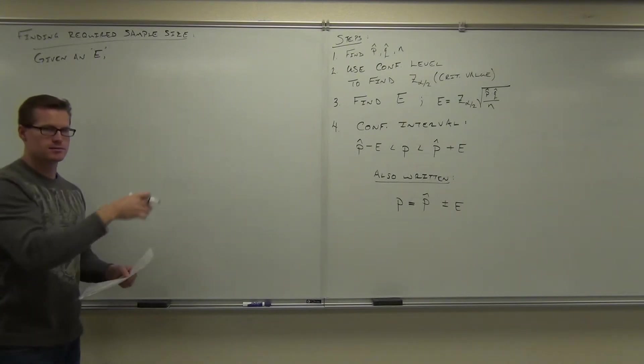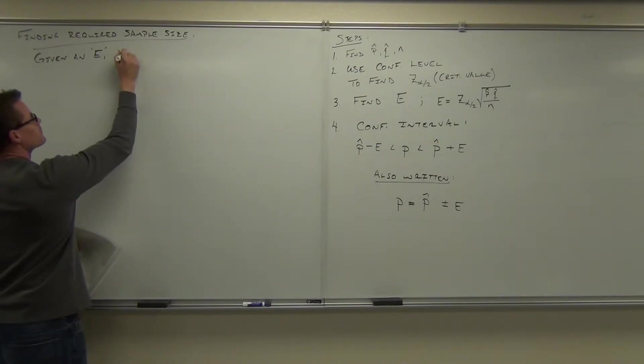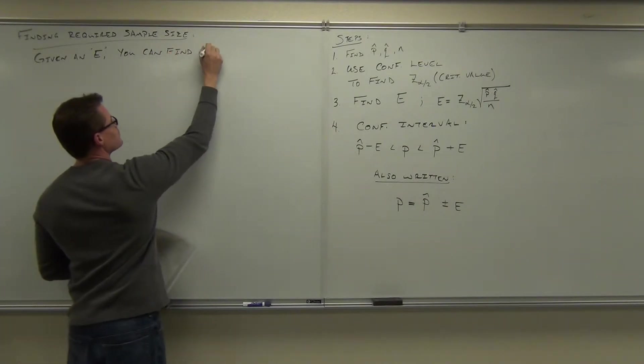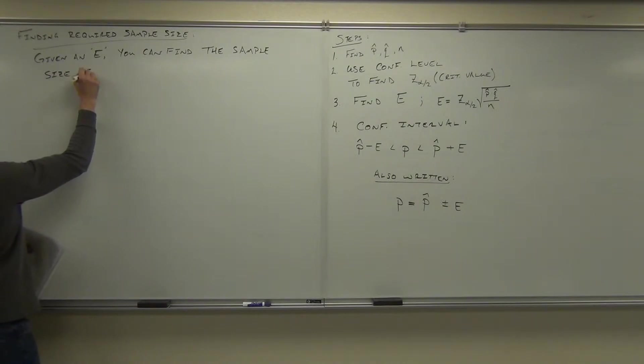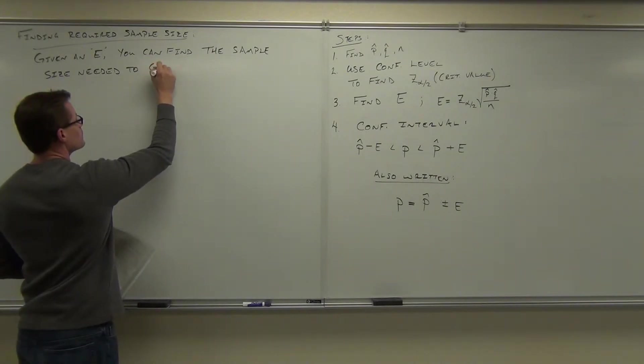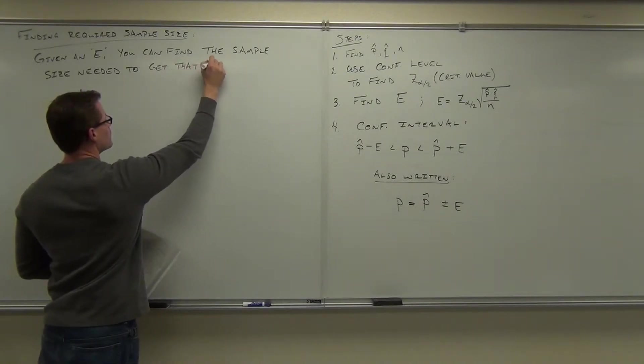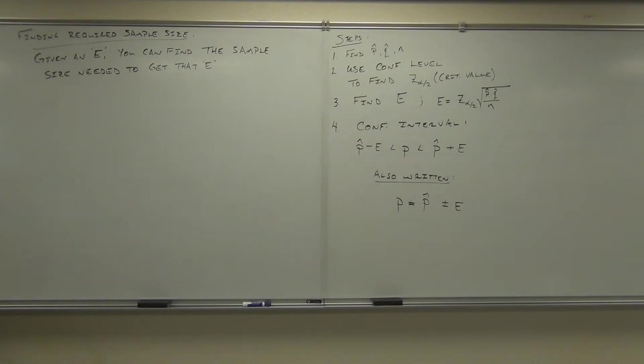Here's what it says: given a margin of error, given an E, you can find a sample size big enough to make it happen. Given an E, you can find the sample size needed to get that E. We're going to do the algebra on this thing, and that's where we'll stop today.